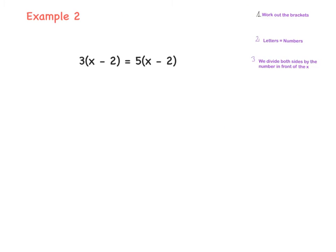Let's try another example. We have 3 multiplied by (x minus 2) equals 5 multiplied by (x minus 2). First of all, we have our rules and the first step is to work out the brackets — the same thing we did a few lessons back, sorting out the expressions. So 3 multiplied by (x minus 2) is 3 by x and 3 by minus 2, and the same on the other side: 5 by x and 5 by minus 2. It's minus 2 and minus 2, so watch out for the signs.